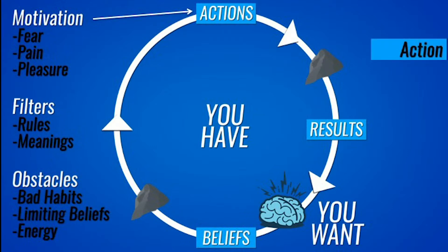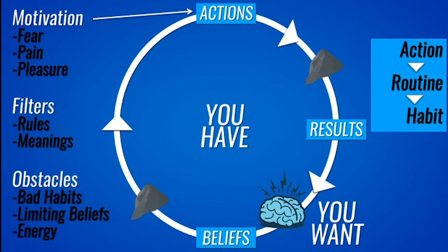If we start taking action over and over again, what ends up happening is we form a routine — similar to going to the gym. In the beginning, we have that pain: I'm out of shape, I've got to get to the gym. We get motivated to avoid the pain and move towards pleasure, and we start taking action. Well, that action, if you keep going to the gym for 30, 60, 90 days in a row, you start to form a routine. Next, that routine, if you continue to do it, forms a habit. Habits will lead to obsessions. Each one of these steps, as it builds, becomes easier and easier.